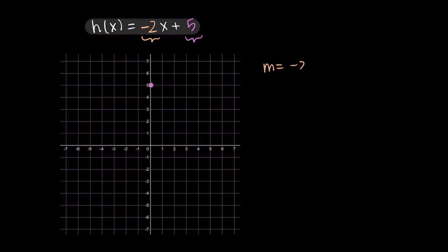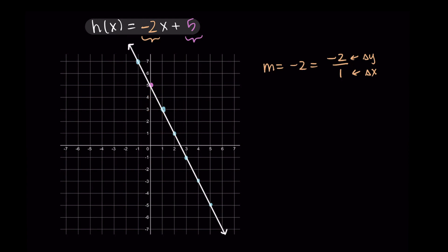Our slope is negative 2, which we represent as a change in output over change in input, so I'll write it as -2/1. That means negative 2 is my change in y and 1 is my change in x. Starting at (0, 5), I go down 2 right 1, then repeat: down 2 right 1. Going the other direction, I go left 1 up 2. With enough points plotted, we can draw the line — you really only need two points, but extra points help when drawing by hand.